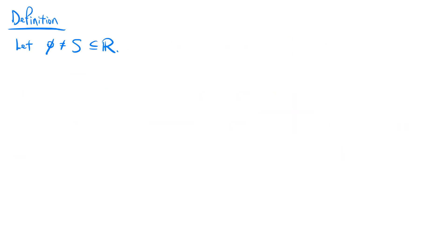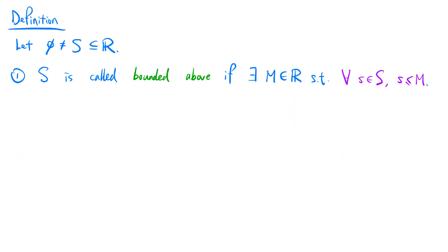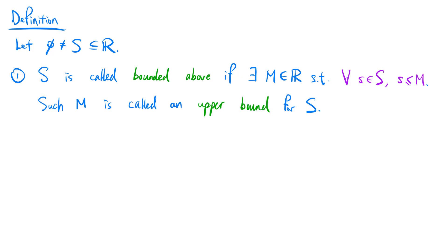Let s be a non-empty subset of the real numbers. s is called bounded above if there exists a real number m such that for all elements s in s, s is less than or equal to m. Such m is called an upper bound for s.